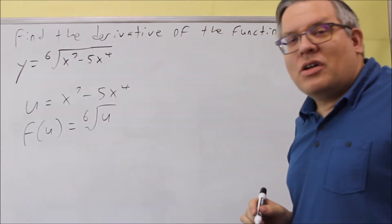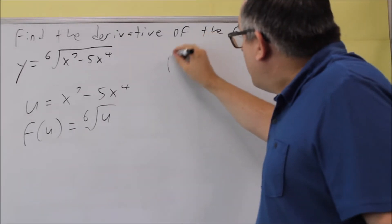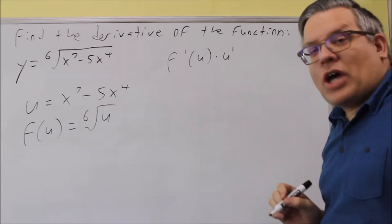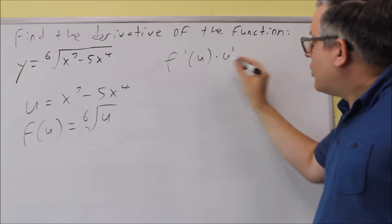So that's going to be our two functions. Now we have to find that because the chain rule formula has us do that: f prime of u times u prime. So it's the derivative of the outside times the derivative of the inside.